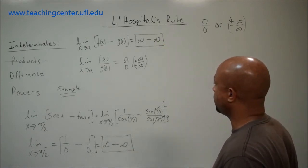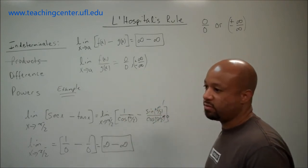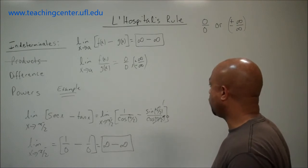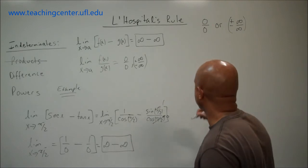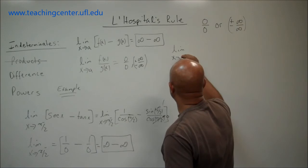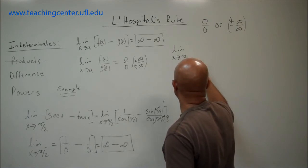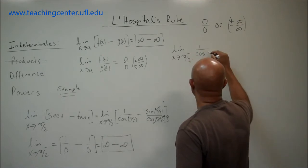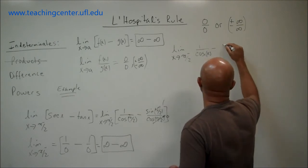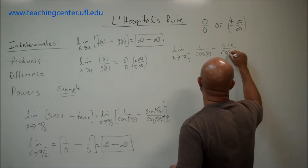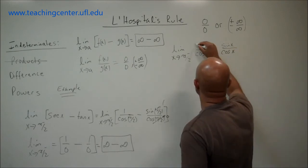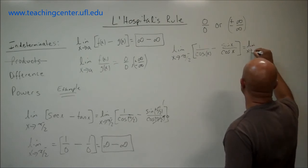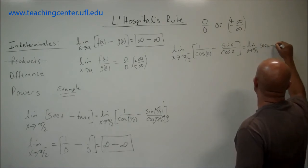This is an indicator that we want to rewrite the limit in such a way that we get one of the fundamental indeterminate forms. I already did it here — let's rewrite the limit as x approaches π/2 from the left of 1 over cosine(x) minus sine(x) over cosine(x), which equals our original limit of secant x minus tangent x.